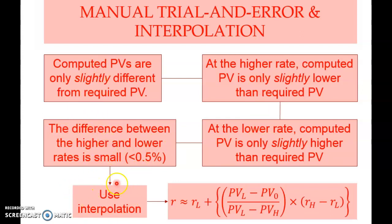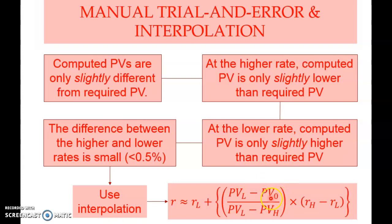If both conditions are met, you can use the interpolation formula. The formula is: r equals the lower interest rate (L) plus the present value at the lower rate (PV_L, which is higher) minus the required present value (PV_O), divided by PV_L minus the present value at the higher rate (PV_H, which is lower) — that is, higher value minus lower value.